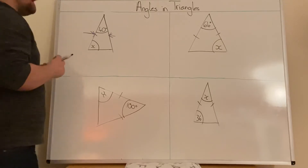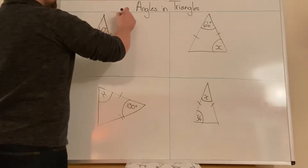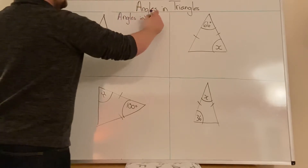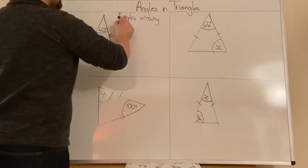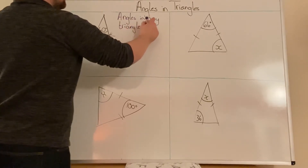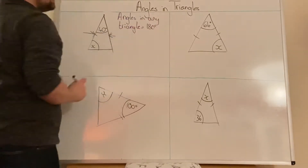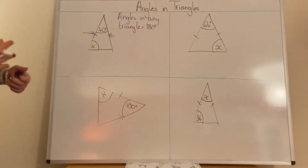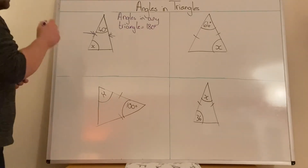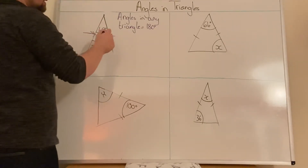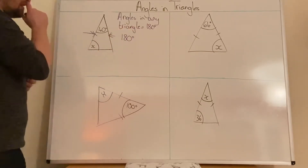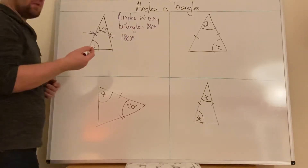Key fact you need to remember: angles in any triangle equal 180 degrees. You must remember that, and if you don't, you need to find a way of remembering it. So all the angles in a triangle add up to 180, and what I'm going to do is take away everything we know.